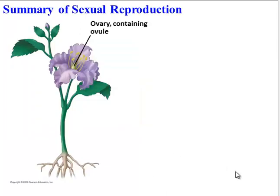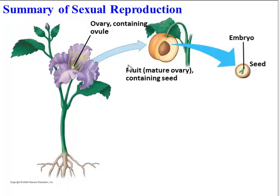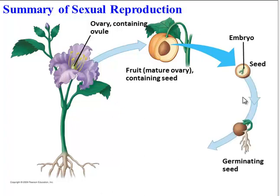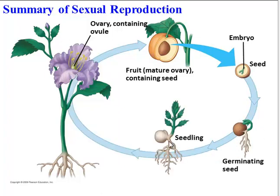Let's sum all of this up — a summary of sexual reproduction in flowering plants. We start in the flower with an ovary containing an ovule. If pollination and fertilization occur, that ovary develops into a fruit and the ovule develops into a seed. That seed contains the embryo, some food, and a protective coat. Then that seed, if triggered by water, will germinate, grow into a seedling, and finally into another adult plant. And that concludes our exploration of plant reproduction.